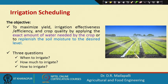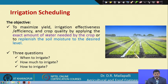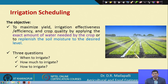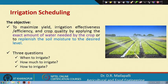The main objective of irrigation scheduling is to maximize yield, and in addition to that, irrigation effectiveness and efficiency, and also crop quality, by applying the exact amount of water needed by the crop or to replenish the soil moisture to the desired level. Our main objective is to increase the yield and at the same time increase the irrigation efficiency and effectiveness, and as a result we expect better crop quality.